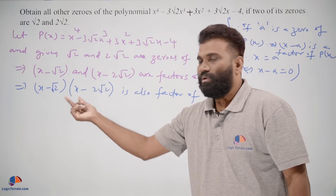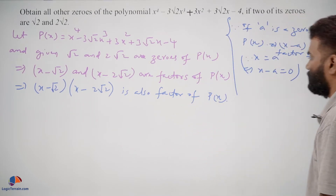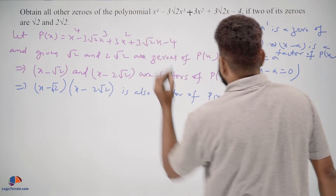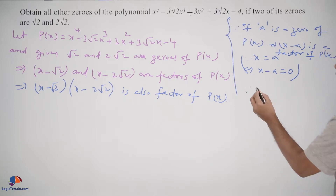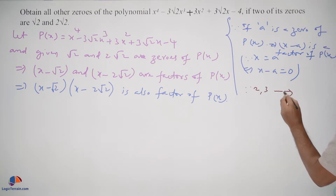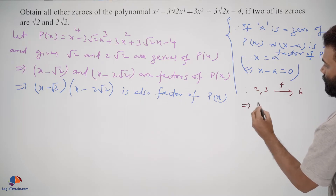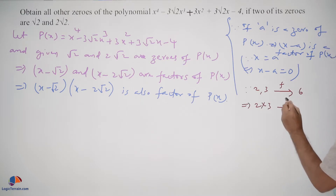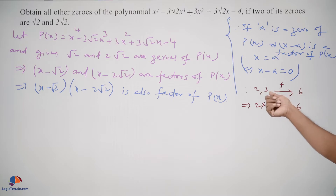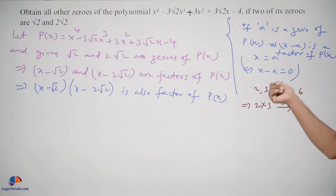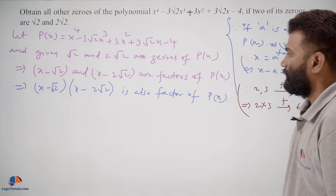The product of two factors is also a factor — why? Since 2 and 3 are factors of 6, then 2 times 3 is also a factor of 6. Here 2 divides 6 and 3 also divides 6, so the product of these two also divides 6. The same reasoning applies here.